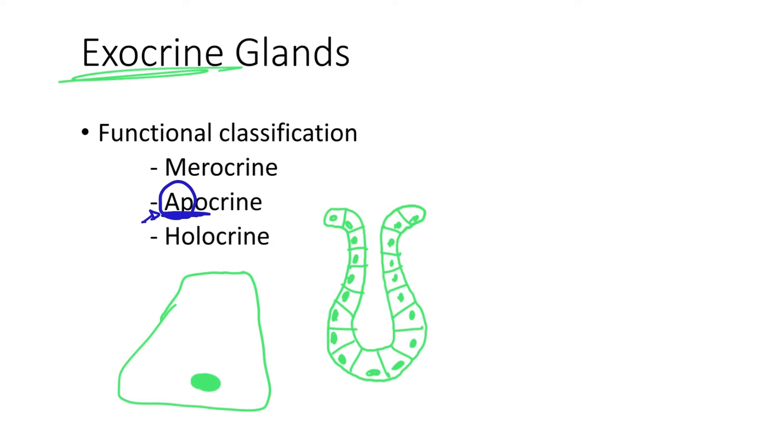So we see here the same cell we are focusing before. And this is the apical surface, right? And we see that the secretion is going towards the apical surface of the cell. And then what we see is that the apical surface of the cell pinches off and is released. And the remaining of the cell repairs itself and repeats the process.